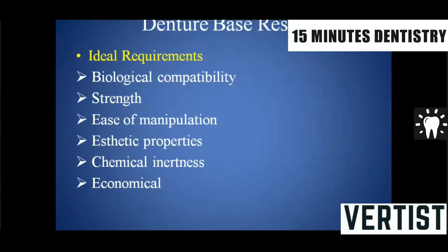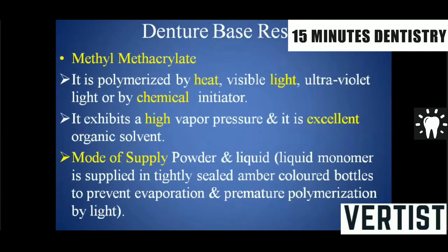What are the ideal requirements for denture base resin? It should have biological compatibility, sufficient strength in the form of compressive and impact strength, ease of manipulation, aesthetic properties similar to the oral cavity, and it should be chemically inert — not giving any chemical reaction to oral tissues. Importantly, it should also be economical in nature.